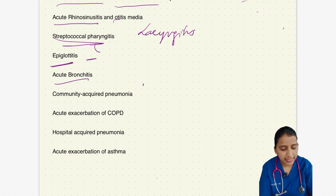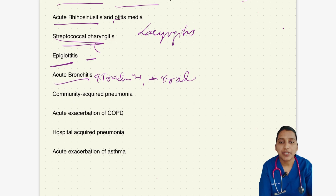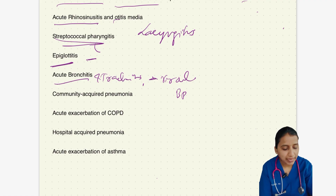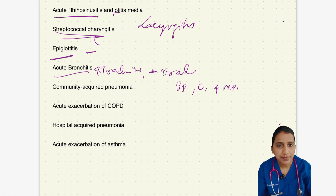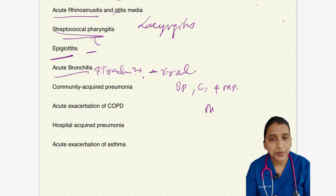Next, talking about bronchitis and tracheitis: in most cases it is viral and therefore antibiotics are not routinely required. Few cases are caused by Bordetella pertussis or atypical bacteria like Chlamydia pneumoniae and Mycoplasma pneumoniae. In that case, if the case is severe and the patient is immunocompromised, a macrolide should be prescribed. Even in children, a macrolide must be prescribed if pertussis is suspected.